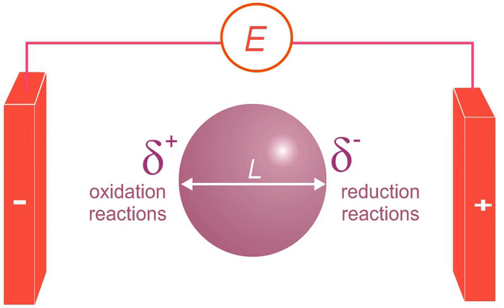If this potential difference is important enough, then redox reactions can be generated at the extremities of the object. Oxidations will occur at one extremity coupled simultaneously to reductions at the other extremity.